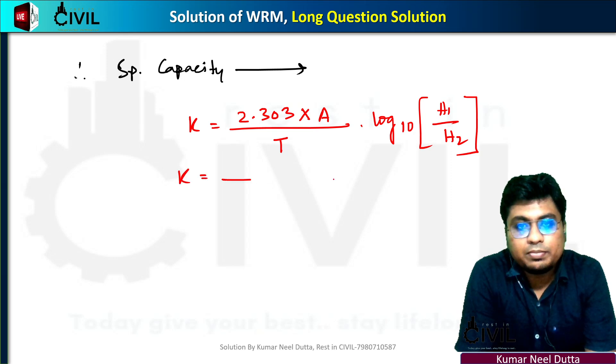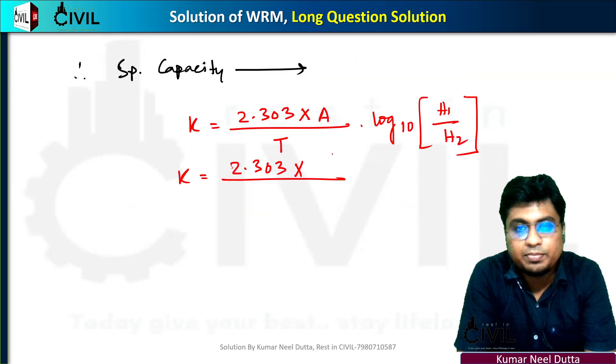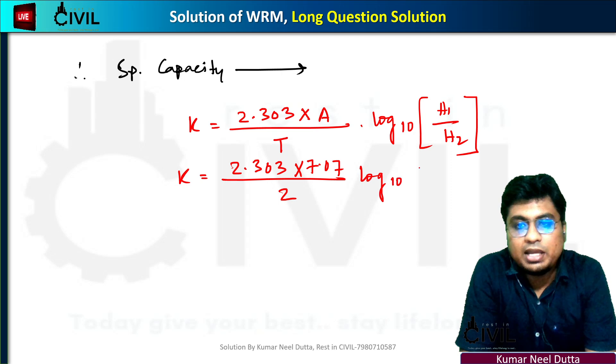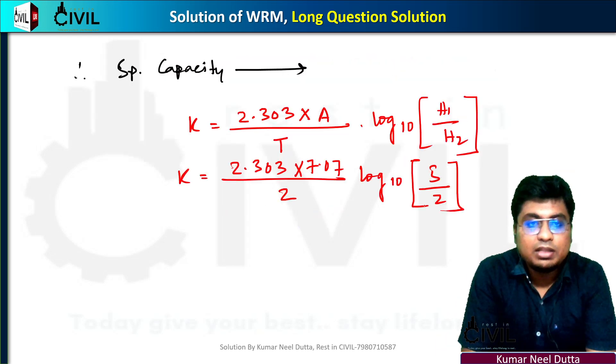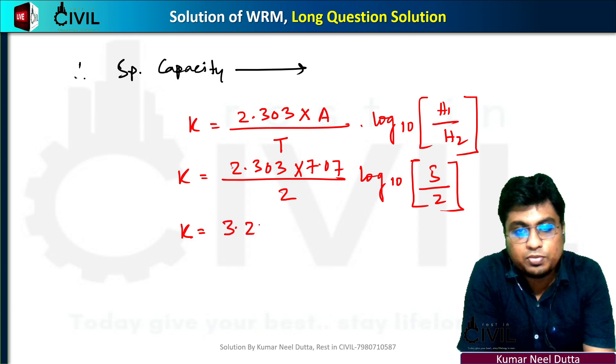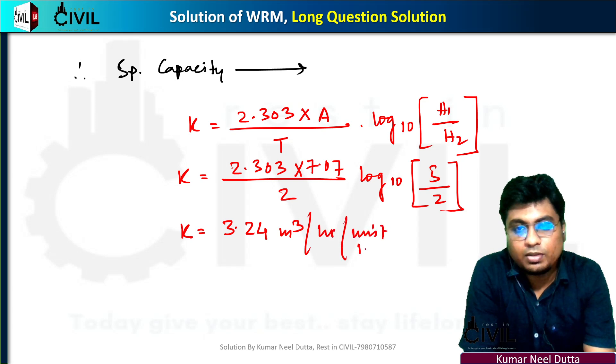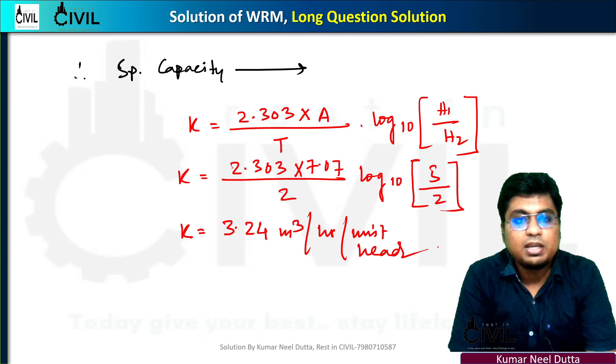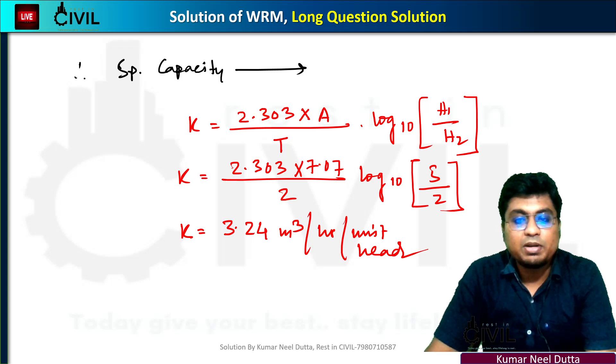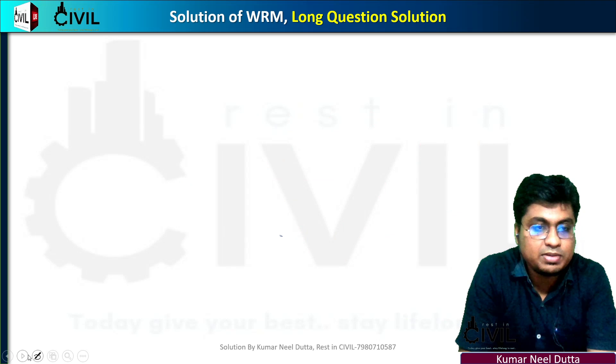Substituting the values: K equals 2.303 times 7.07 divided by T, times log base 10 of 5 by 2.